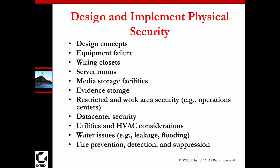Other design and implementation considerations for physical security include equipment failure and wiring closets. Utilities, HVAC, water issues, fire prevention, detection, suppression, media storage, server rooms, wire rooms, and wiring closets — basically the overall infrastructure that runs everything. The key question is: how are we securing each of those?